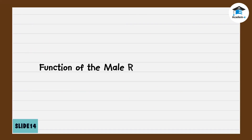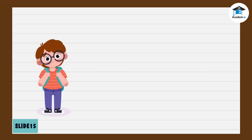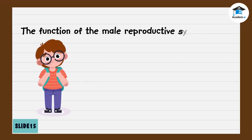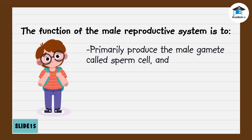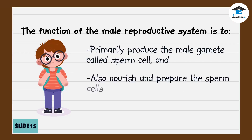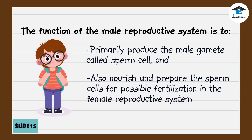Knowing the processes involving the different parts of the male reproductive system, you now understand that its function is to primarily produce the male gamete called sperm cell, and also to nourish and prepare the sperm cells for possible fertilization in the female reproductive system.